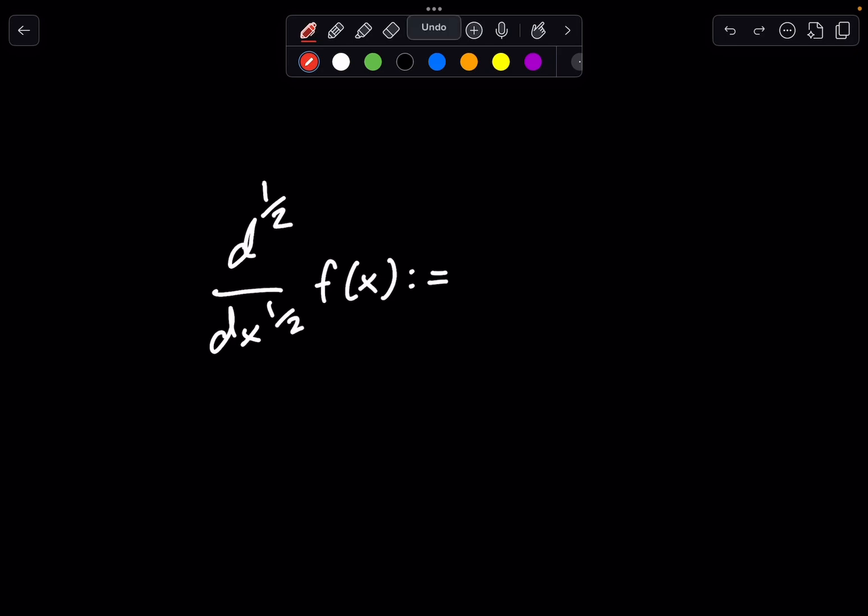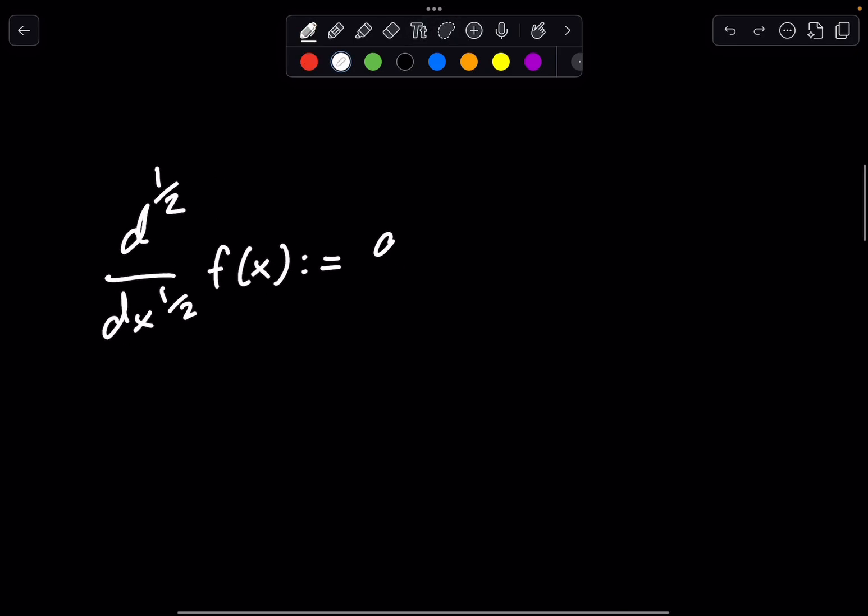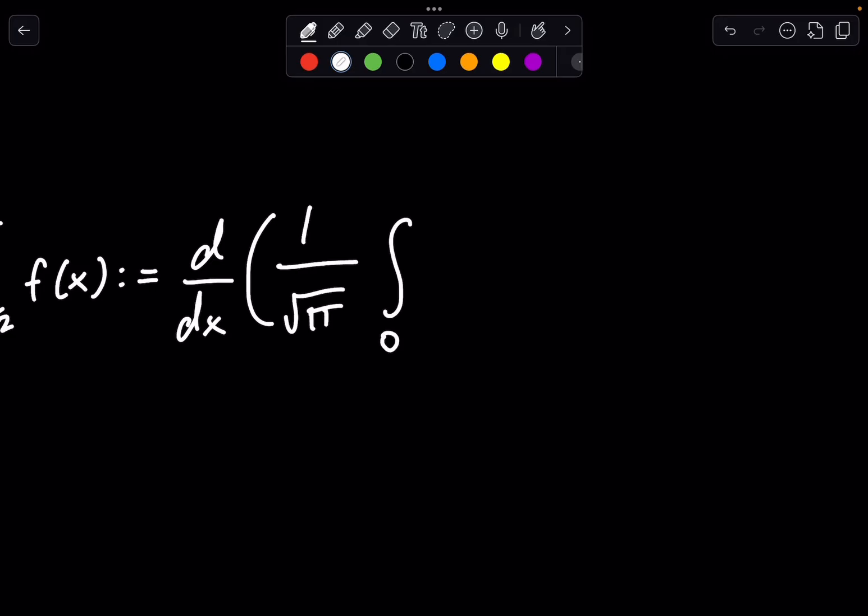This colon equal means defined, so it's defined as this: the derivative of 1 over square root pi, in parentheses, integral from 0 to x of f(t) over (x minus t) to the 1/2 power dt, just like this.